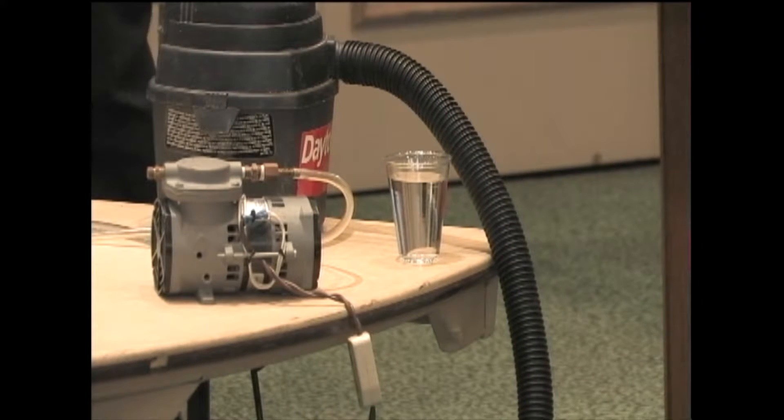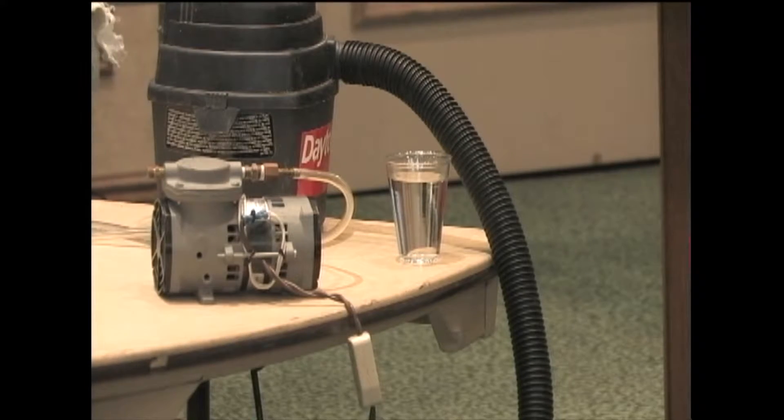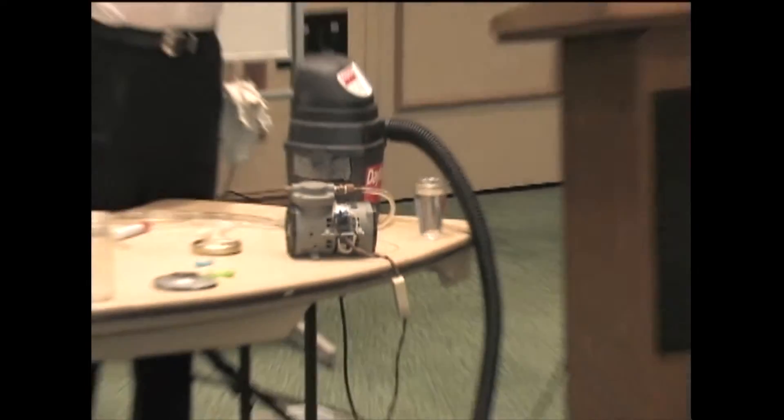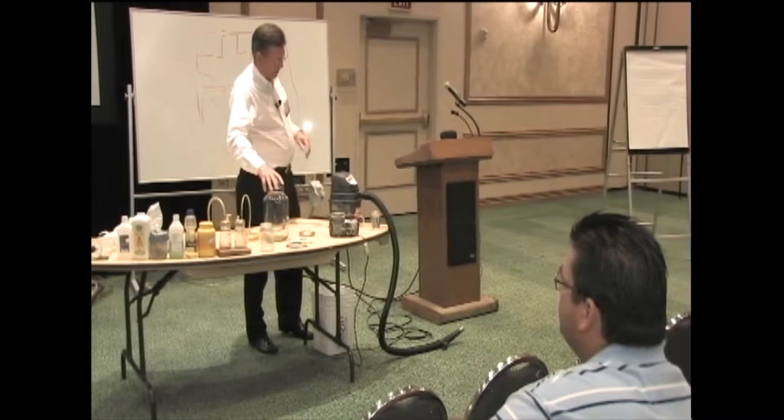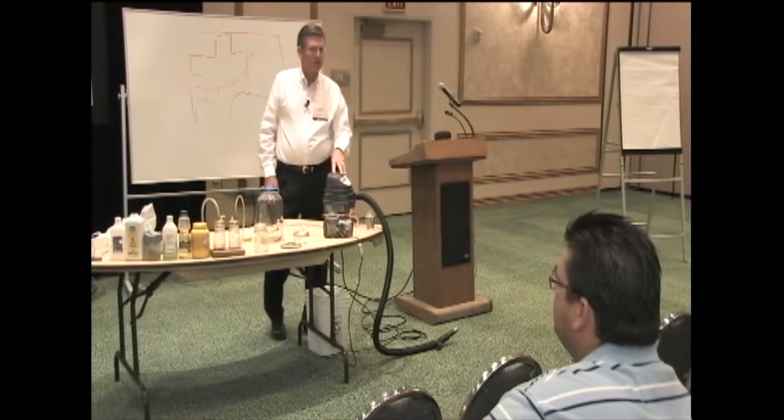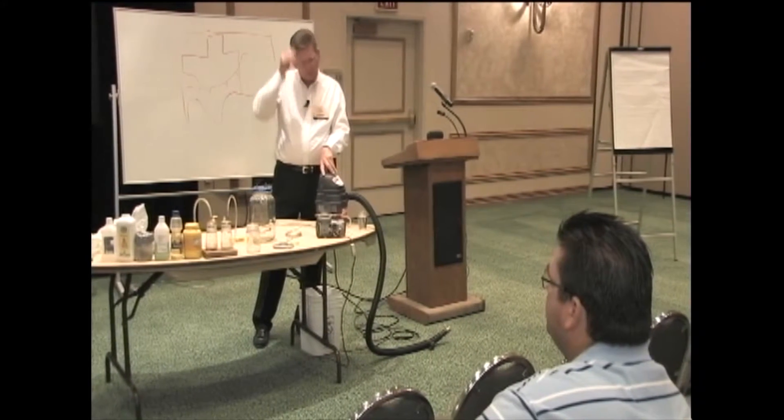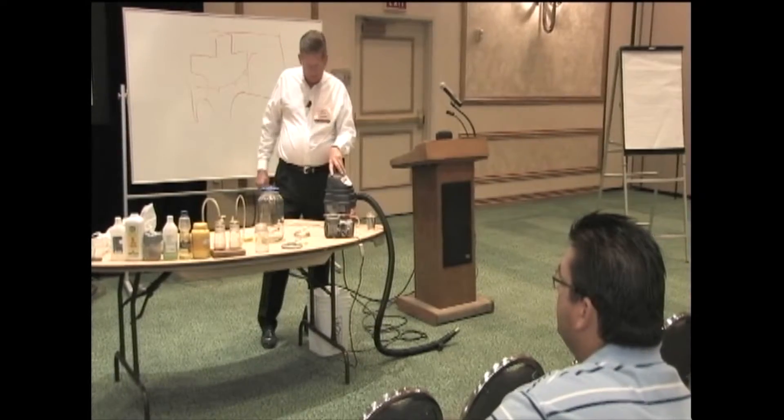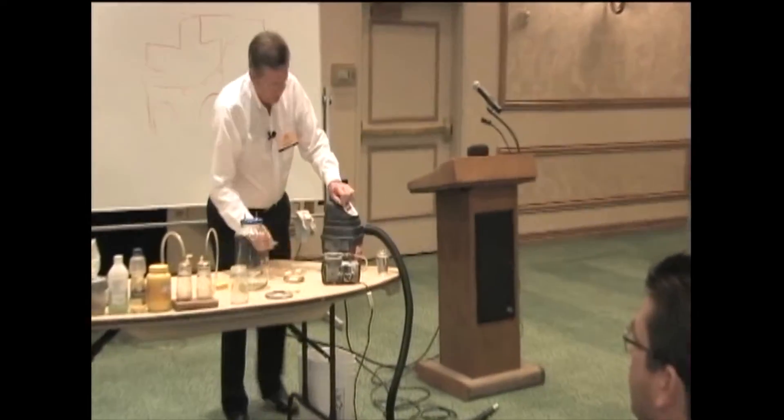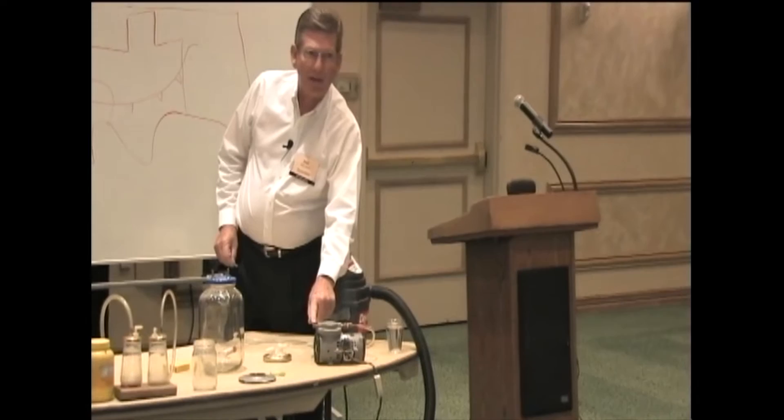It only moves three quarters of a cubic foot per minute. About this much air is all it moves per minute. It's going to vacuum. It will produce 22 inches of mercury, we'll get into what that means in a few minutes. But what I want to do is first take the pressure side, which is this side of the vacuum pump.